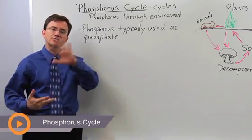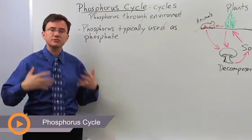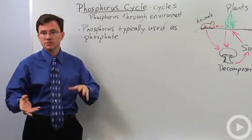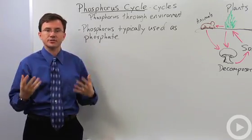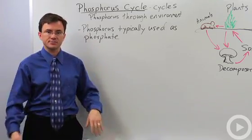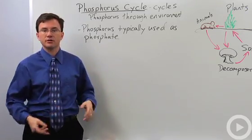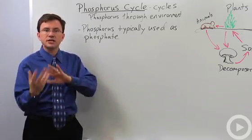The phosphorus cycle is how phosphorus cycles its way through the environment, both through biotic mechanisms, like when plants take it in from the soil, and abiotic mechanisms, like when rocks are weathered and eroded and give off their inorganic phosphates into the water.